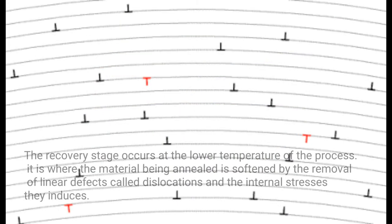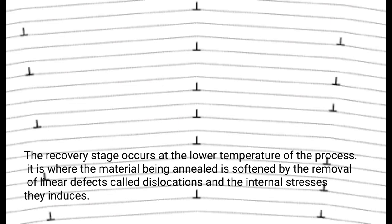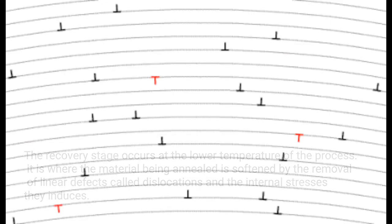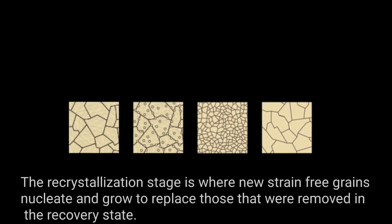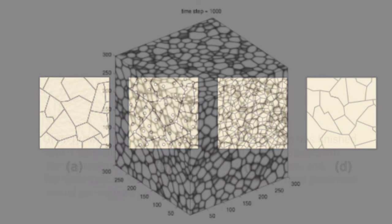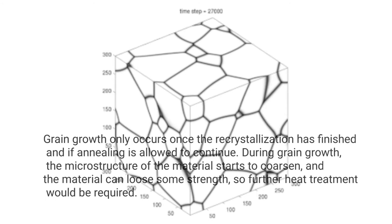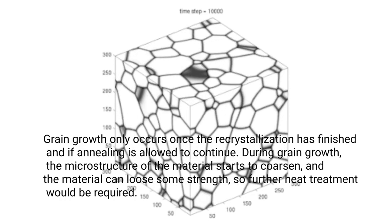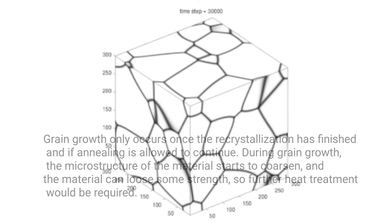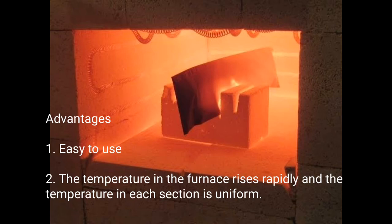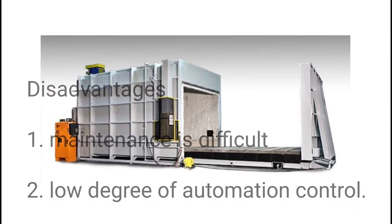There are three stages in an annealing furnace: recovery, recrystallization, and grain growth. The recovery stage occurs at lower temperatures, where the material is softened by the removal of linear defects called dislocations. The recrystallization stage is where new strain-free grains nucleate and grow to replace those removed in recovery. Grain growth only occurs once recrystallization has finished; if allowed to continue, the microstructure coarsens and the material can lose some strength. Advantages: easy to use; temperature rises rapidly and is uniform in each section. Disadvantages: maintenance is difficult; low degree of automation control.